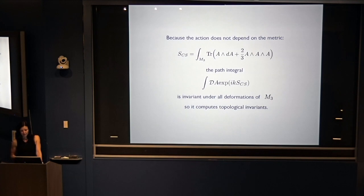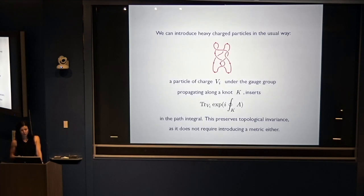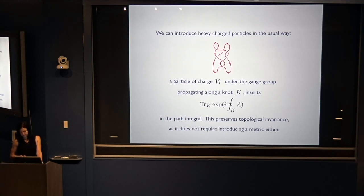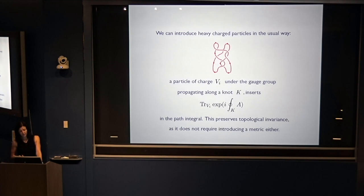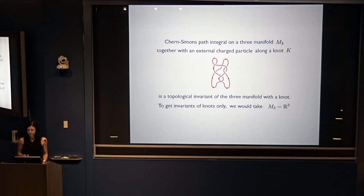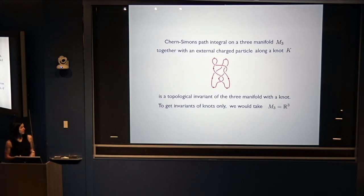Because the action doesn't depend on the metric, the path integral is invariant under all deformations of the 3-manifold, so it computes topological invariants. You get to introduce heavy charged particles external to the theory in the usual way by inserting into the path integral a quantity where, for a particle of charge under some representation V of the Lie algebra, this preserves topological invariance because it also doesn't require introducing the metric. So Chern-Simons's path integral on a 3-manifold together with external charged particles gives topological invariants of the 3-manifold together with knots and links.